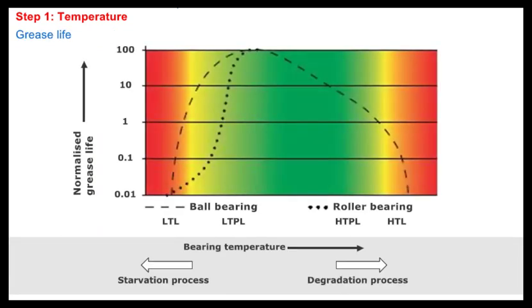SKF does not recommend using a grease above or below its temperature limits, in the red zone, for relubrication intervals. At temperatures above the high temperature performance limit, HTPL, grease degrades with increasing rapidity, and the by-products of oxidation have a detrimental effect on the relubrication interval. Therefore, temperatures in the amber zone between the high temperature performance limit, HTPL, and the high temperature limit, HTL, should only be allowed to occur for very short periods, and not longer than a few hours.